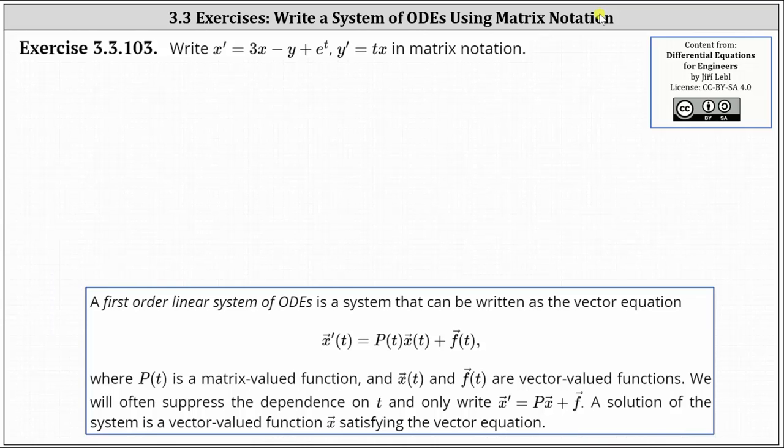This means we want to write the system as a vector equation shown below using matrices. We have x prime of t equals P of t times x of t plus f of t, where P of t is a matrix-valued function.